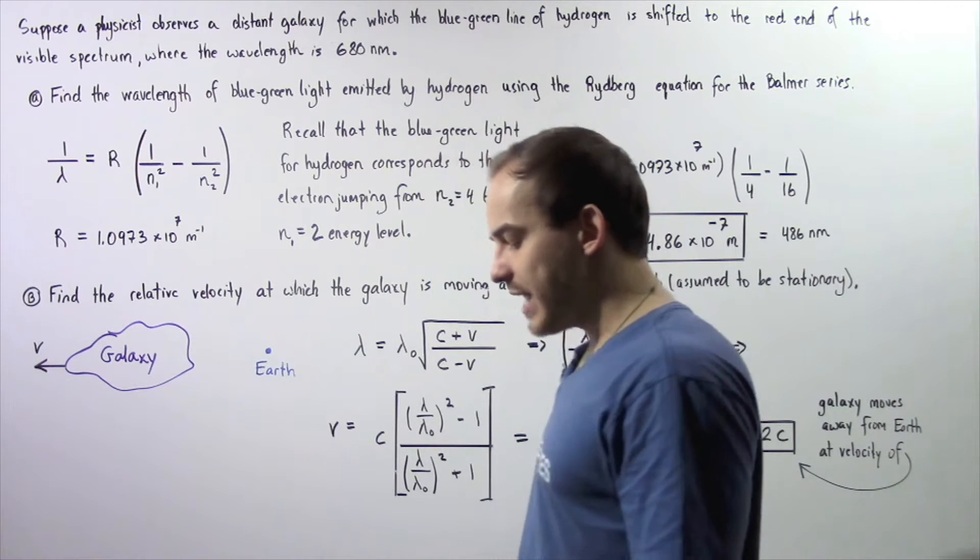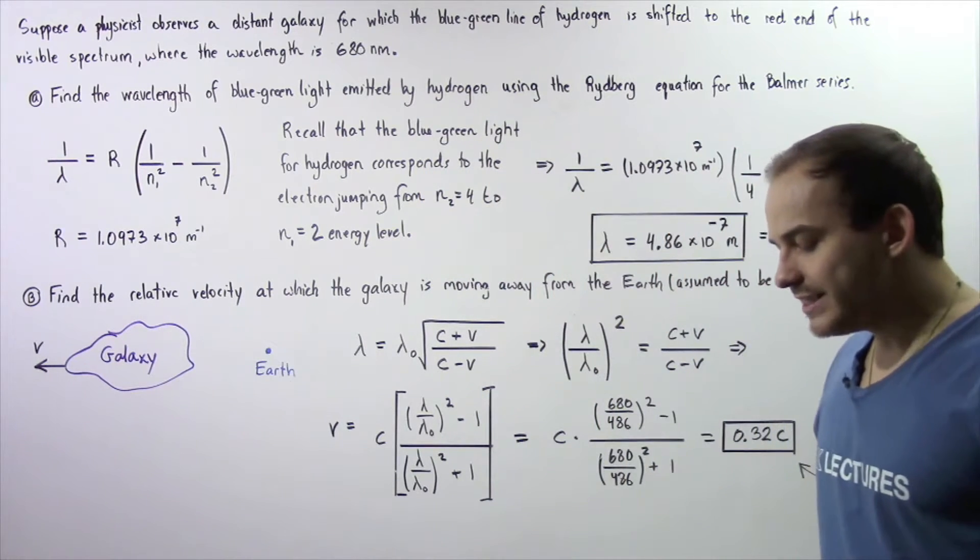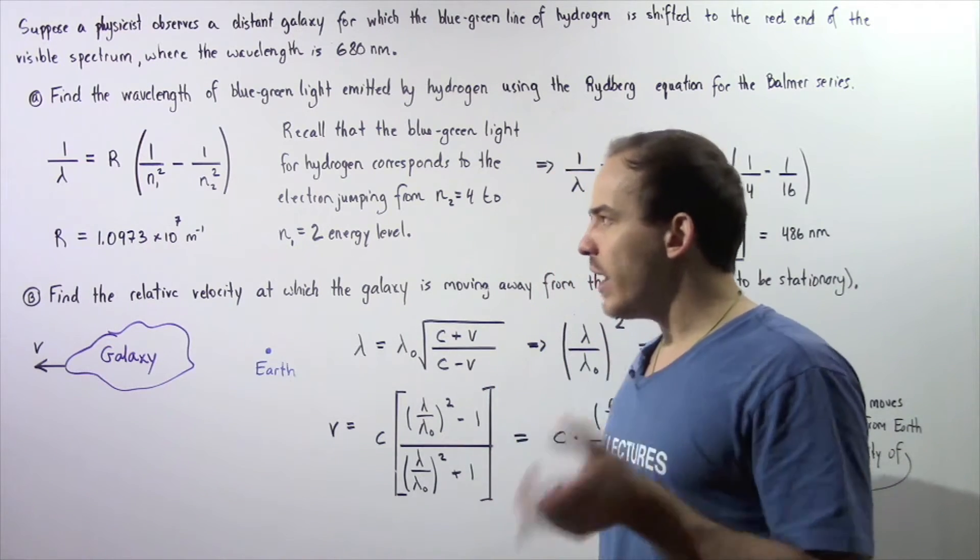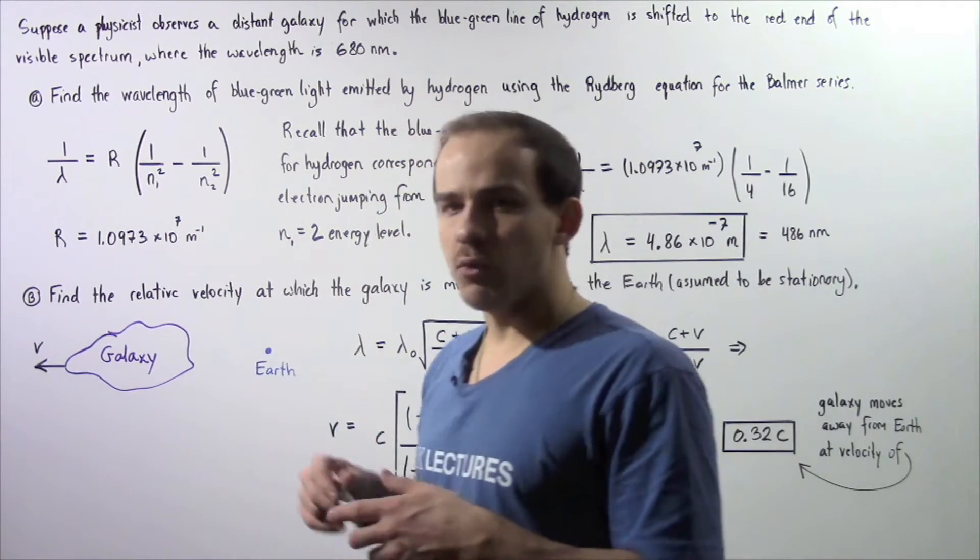Let's begin with part A. To calculate the wavelength, we have to use the Rydberg equation. The Rydberg equation is given by the following formula.